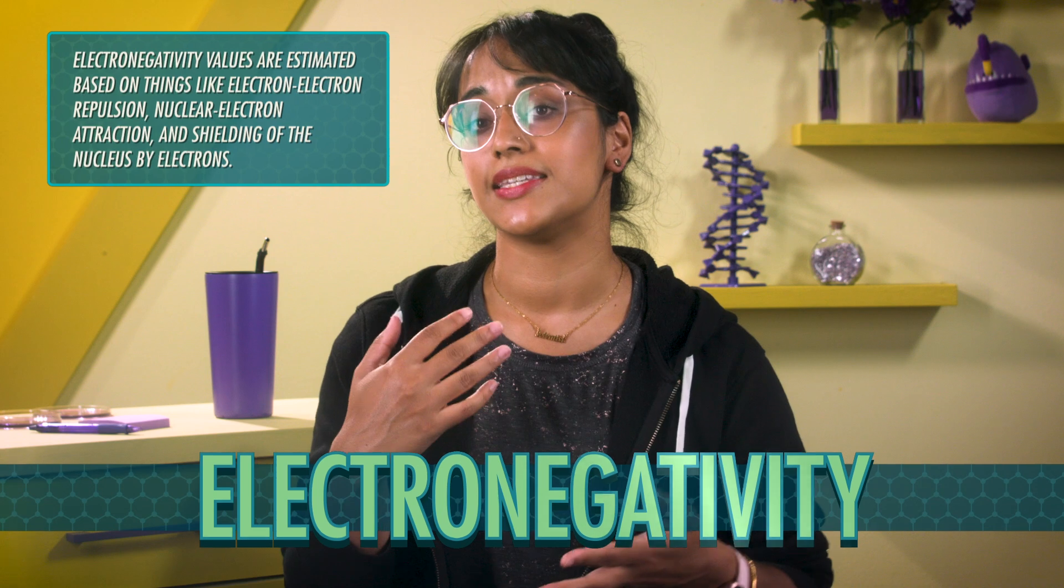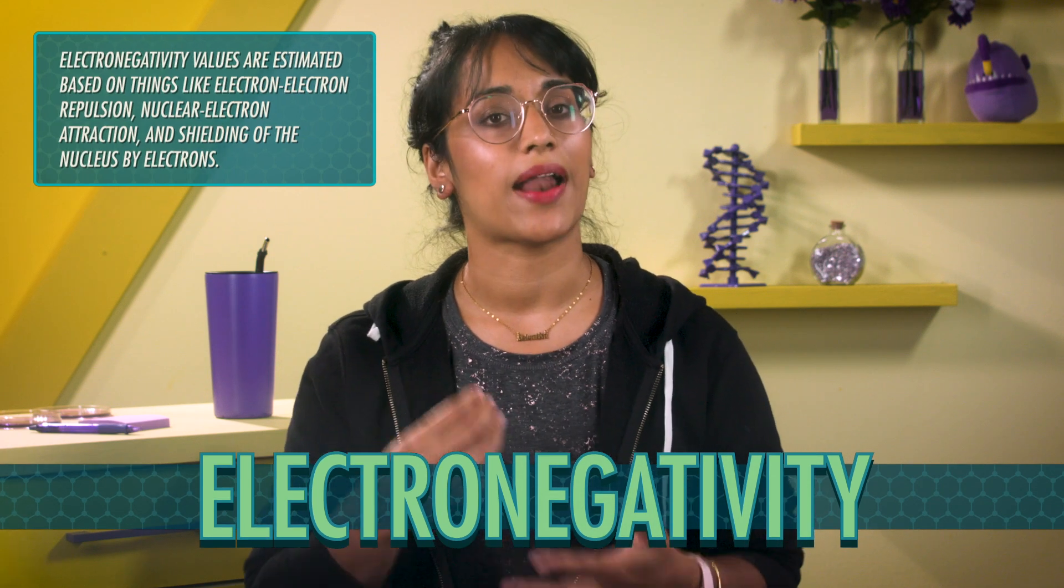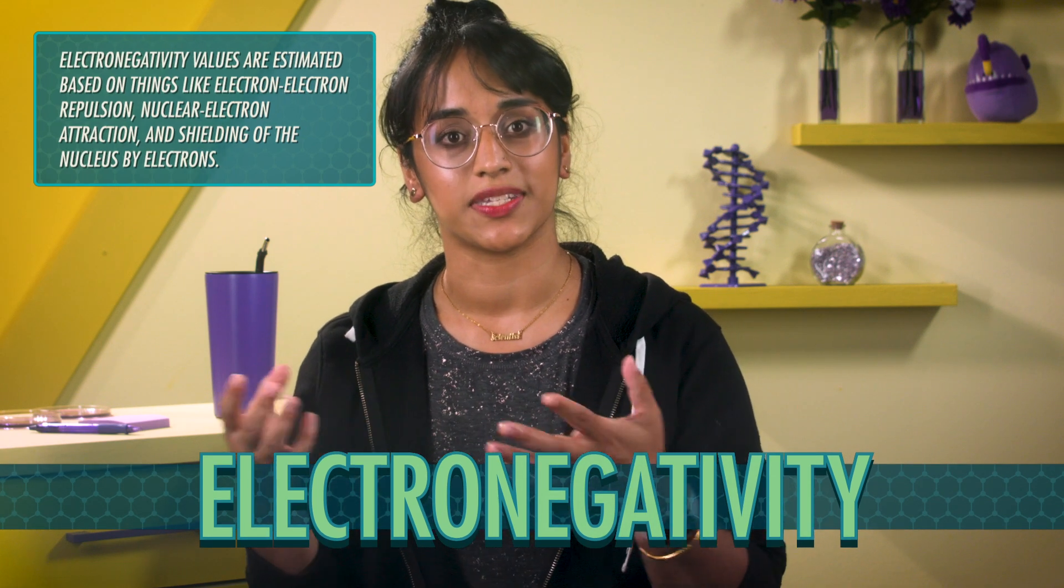When atoms are bonded together, they don't necessarily share electrons equally. One element could be a little greedier than another. Electronegativity is the atomic property that helps us think about how much one atom will attract electrons in a bond compared to other atoms. Because electronegativity depends on two atoms in a relationship with each other, the electronegativity of a specific element can vary a little, depending on what chemical compound it's a part of.